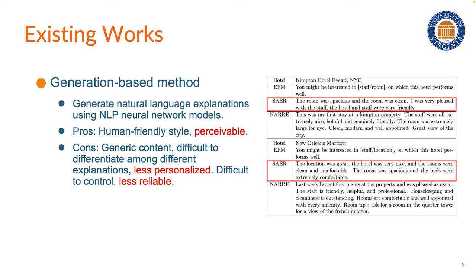You can see that the model turns out to generate some generic sentences like, the location was great, the hotel was very nice, and this makes the generated explanation less personalized. And also we have less control over this kind of generation-based model. It may even generate some sentences with counterfactual information.